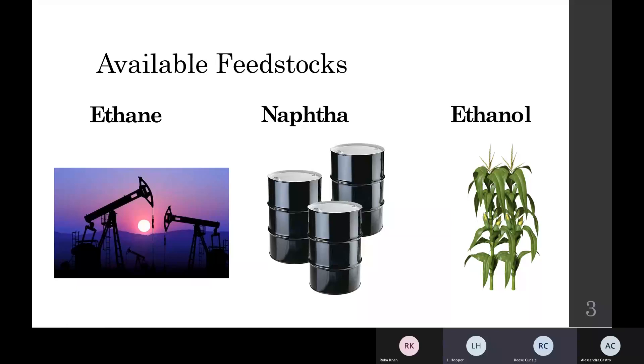Three alternative feedstocks exist for creating ethylene: ethane, naphtha, and ethanol. Ethane was chosen for its high yield of ethylene, low cost, and low process emissions compared to the others.